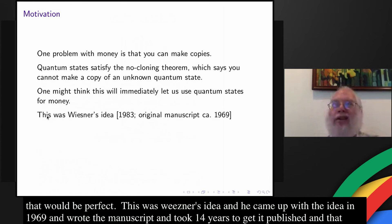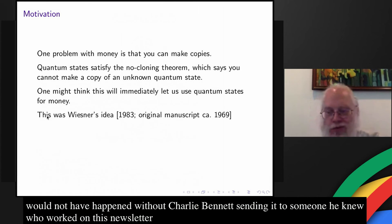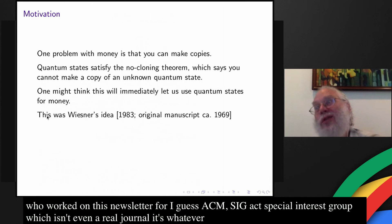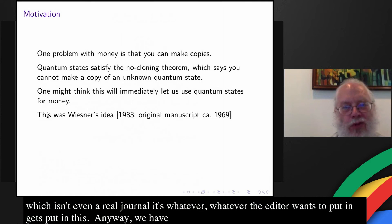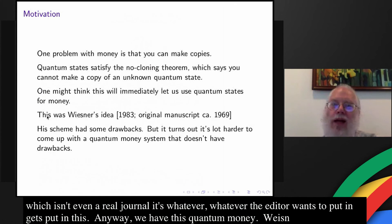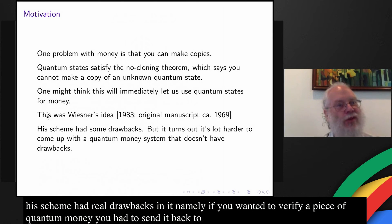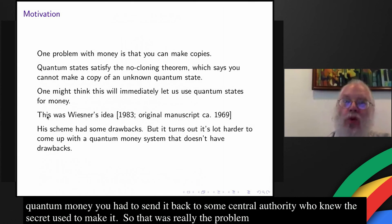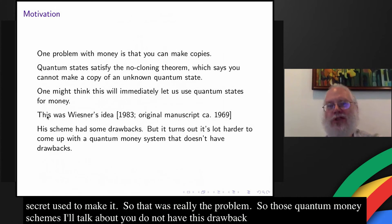And that would not have happened without Charlie Bennett sending it to someone he knew who worked on this newsletter for ACM SIGACT, a special interest group which isn't even a real journal — whatever the editor wants to put in it gets put in it. So anyway, we have this quantum money from Wiesner. Now it turns out that Wiesner's scheme had some real drawbacks: namely, if you wanted to verify a piece of quantum money, you had to send it back to some central authority who knew the secret that was used to make it. So that was really the problem. The quantum money schemes I'll talk about do not have this drawback — you can verify them just with a piece of the quantum money.